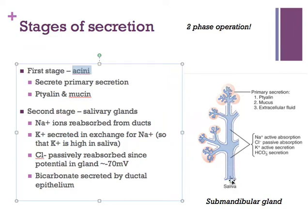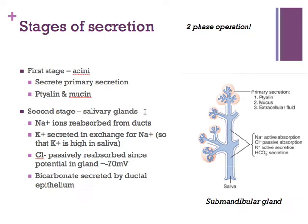The duct is just the lumen that collects products from the various acinar cells. The second stage involves the salivary glands themselves, where there will be absorption — sodium chloride is absorbed into the body — and then secretory activity, primarily secreting bicarbonate and then potassium.